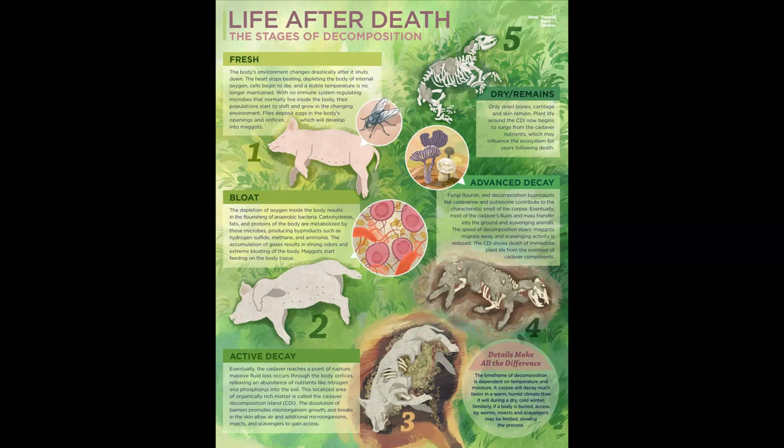The first thing we have to do is identify the stages of decomposition. There are five stages we need to be familiar with. The first stage is called fresh. It basically is the body's changing environment after it shuts down. All of the organs stop, the heart stops beating, all of the internal oxygen contents will drop, cells begin to die, and stable temperatures are no longer maintained.